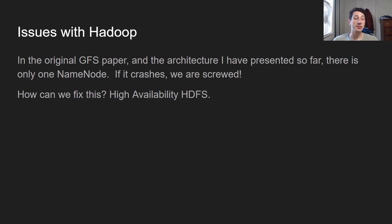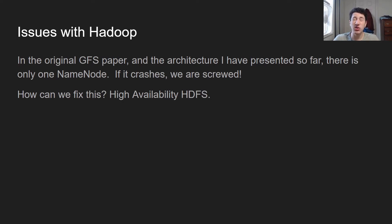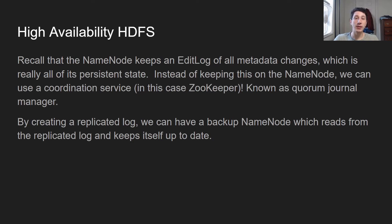So what are some issues with Hadoop? If you've been paying attention, you may have noticed I've only mentioned one name node, which is obviously a problem. What happens if the name node goes down? Everything crashes. In the original Hadoop implementation there was a hacky way of solving things called a secondary name node — basically just a standby that tried to take in all those changes — but there's actually a better way using coordination services. This is known as high-availability HDFS. Keep in mind that the main persistence point of the name node is the edit log, which keeps track of all file metadata changes such as renaming files or creating a new directory. So instead of keeping all of those changes locally to the name node, we use something like a few ZooKeeper nodes to create a replicated log representing the edit log — in Hadoop this is known as the quorum journal manager.